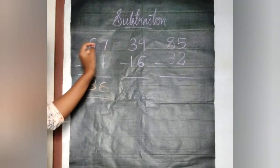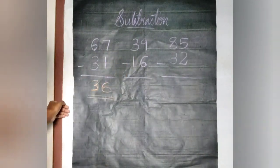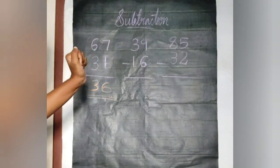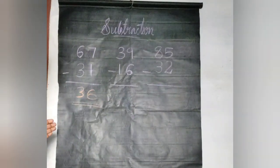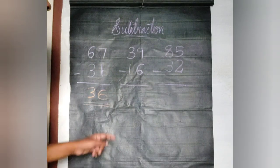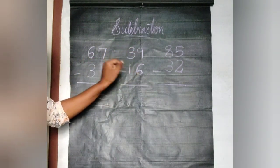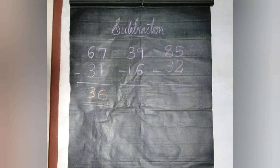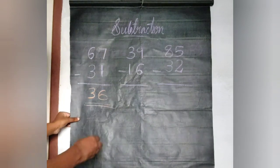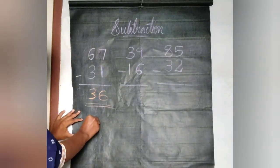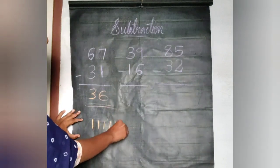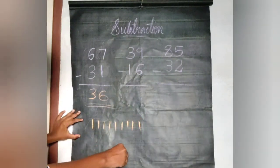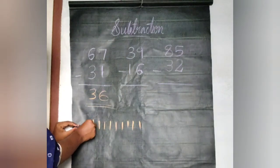Going to the next question: 39 minus 16. Let's look at the position of ones. 9 and 6 are there in the position of ones. So we have to do 9 minus 6. Look at the number line from right to mark: 1, 2, 3, 4, 5, 6, 7, 8, 9. So we have to strike through 6 lines.